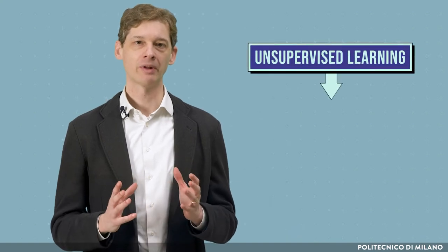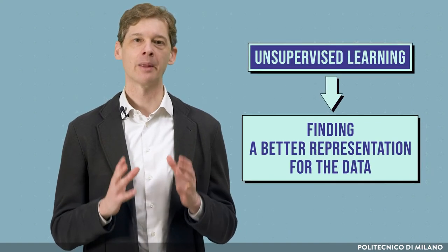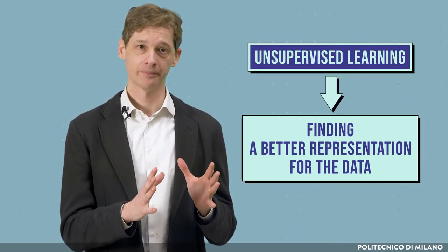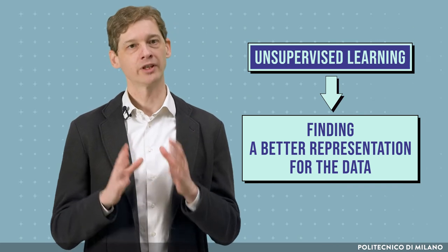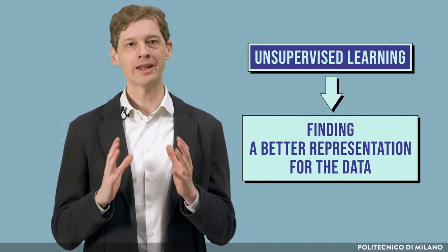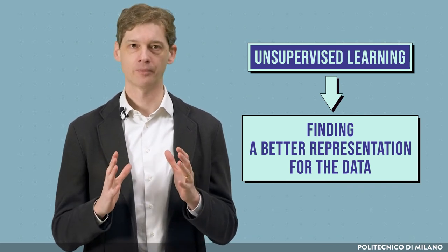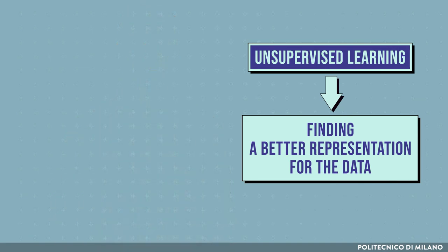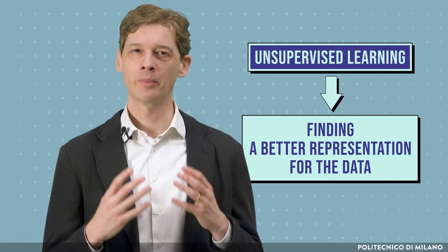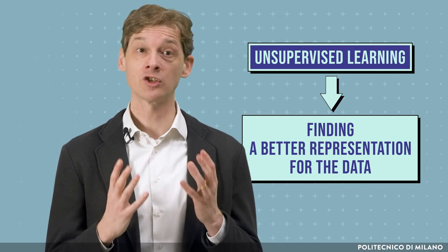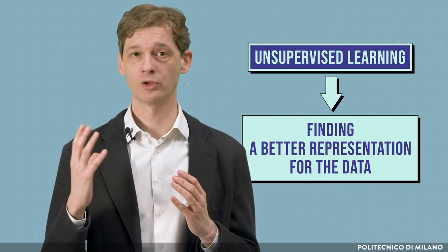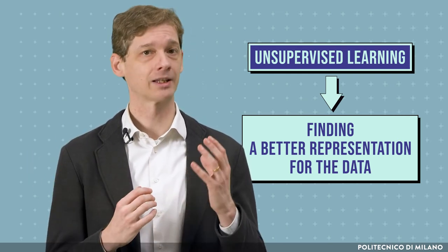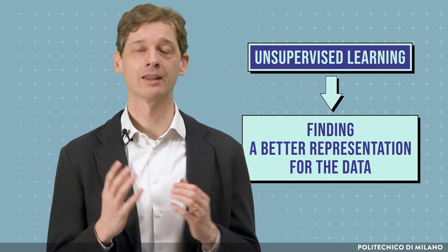Unsupervised learning aims at finding a better representation for the data. In this case, we have a dataset of observations without any output variable, and we want to discover hidden structure from unlabeled data. Developing better data representations may be an essential step in solving other machine learning problems, performing data analysis and data visualization.